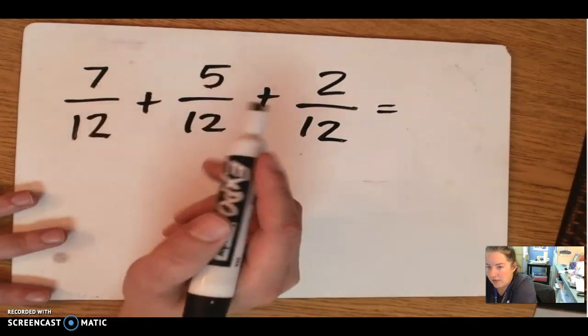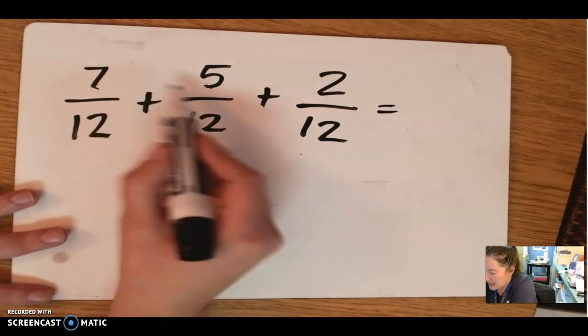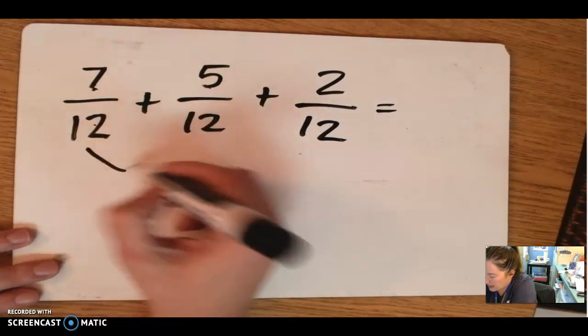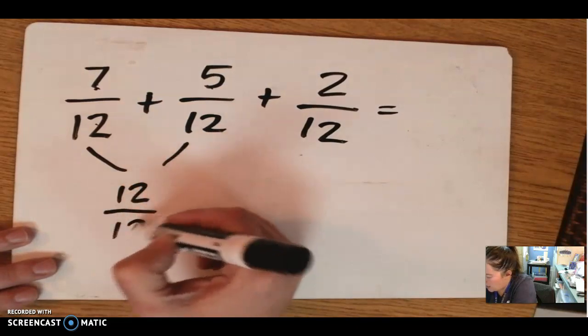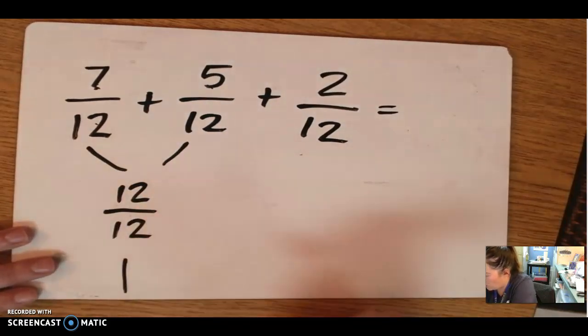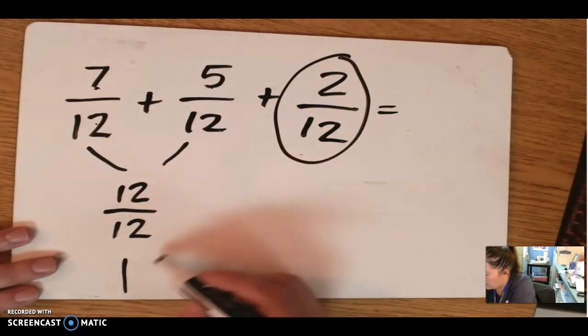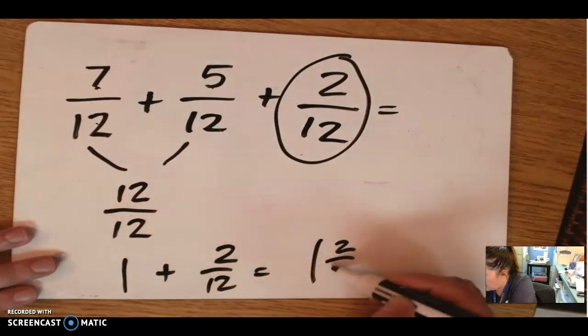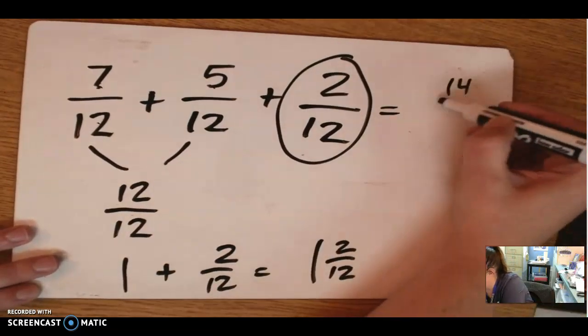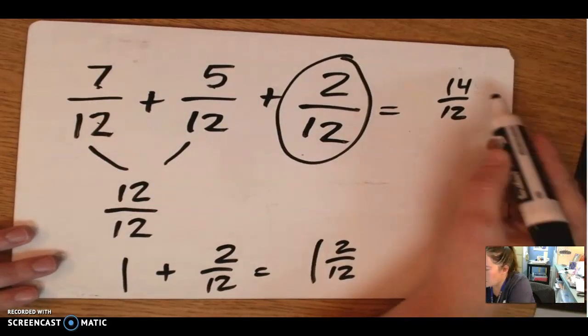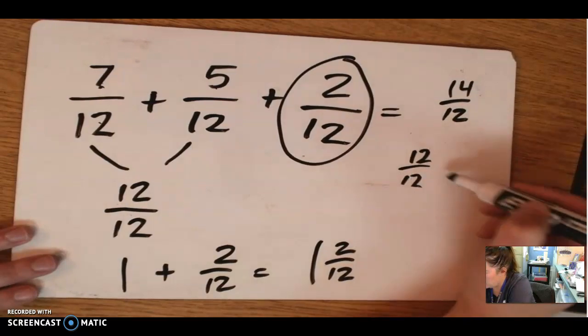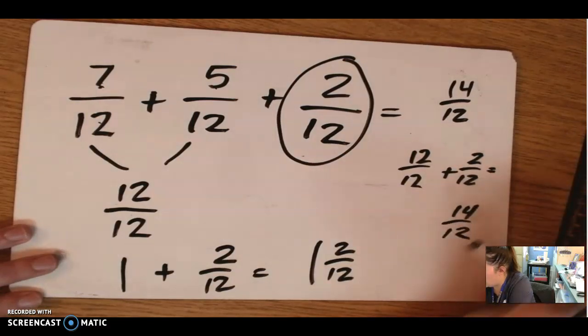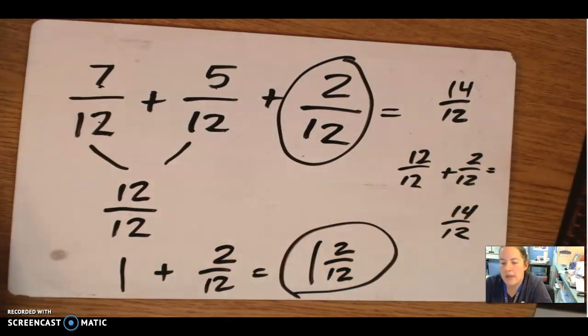Yes. 7 plus 5 make 12. So 7 twelfths plus 5 twelfths, these two together should make 12 twelfths, which is the same as 1 whole. Now just add it with this 2 twelfths that's left, and we get 1 whole and 2 twelfths, which is the same as our 14 twelfths that we would have had up here, right? Because 12 twelfths plus 2 twelfths would give us our 14 twelfths. But I want to write it like this, 1 whole and 2 twelfths.